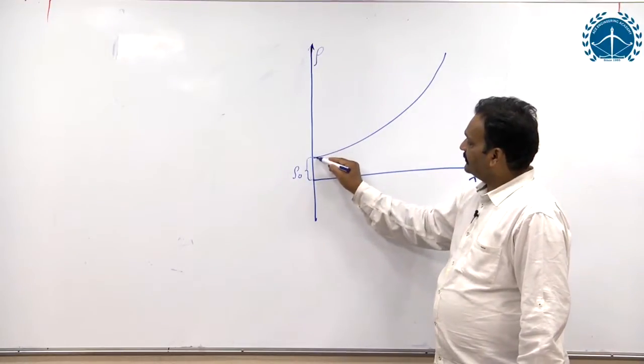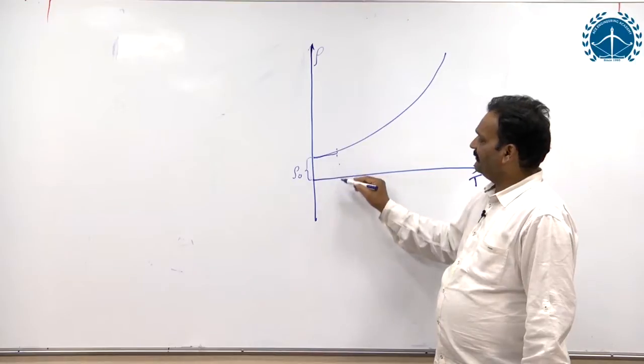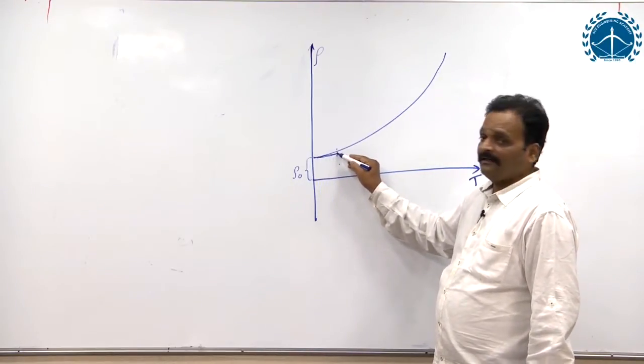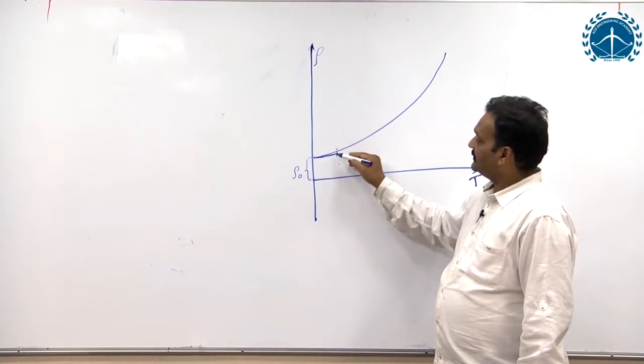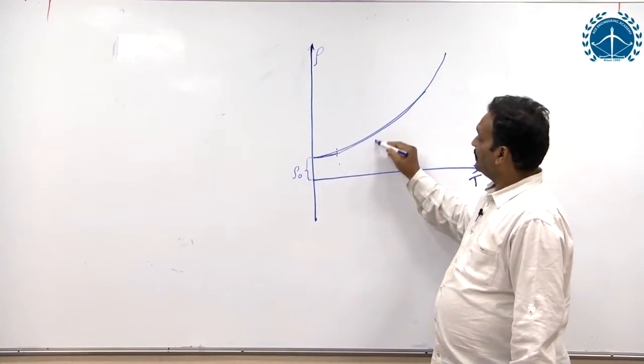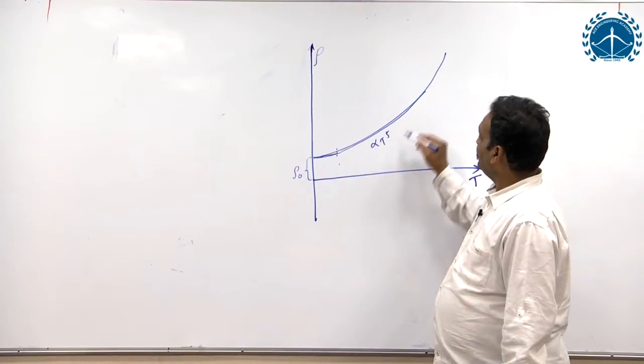For up to about very low temperatures of about 20 Kelvin, resistivity is almost independent of temperature - resistivity remains constant. Beyond 20 Kelvin, resistivity increases very rapidly along with increasing temperature, proportional to T to the power 5.